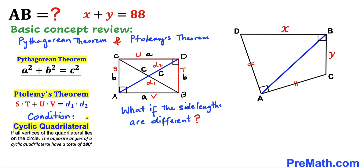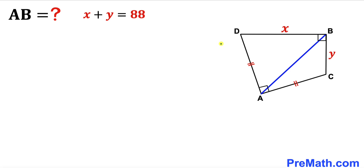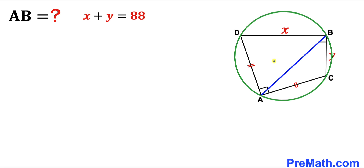The condition is that the rectangle must be a cyclic quadrilateral — in other words, all vertices A, B, C, and D must lie on the circle. This diagram depicts Ptolemy's theorem. Returning to our given problem, quadrilateral ACBD has become a cyclic quadrilateral since all its vertices lie on the same circle.